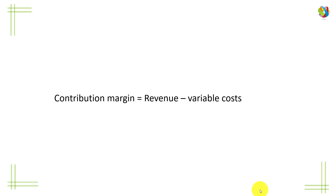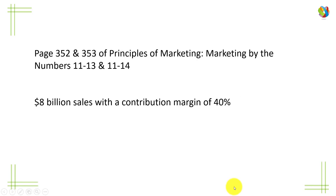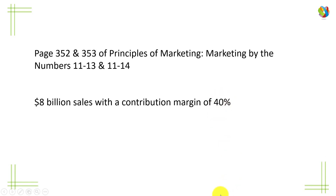Let's crack on. The example is on pages 352 and 353 of Principles of Marketing — marketing by the numbers, exercises 11-13 and 11-14. The key information given is that Louis Vuitton has $18 billion worth of sales a year, and these sales give a contribution margin of 40%.